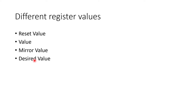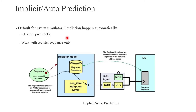Now the first type is implicit or auto prediction. It is the default for every simulator and this prediction happens automatically, that's why it's called auto prediction or implicit prediction. With the help of set_auto_predict(1) we can enable this, and with set_auto_predict(0) we can disable this. Now let's understand with the help of this diagram, which I have taken from the UVM cookbook — I acknowledge their work. We are defining a register sequence, and the information contained in this register sequence will update the RAL database register, which is an exact mirror image of DUT registers and memory.